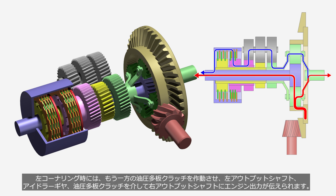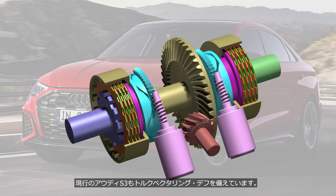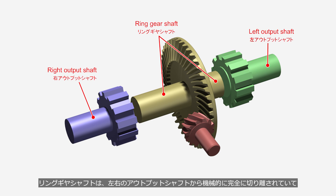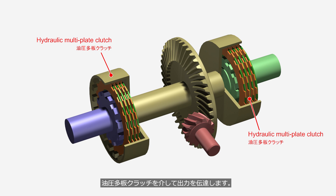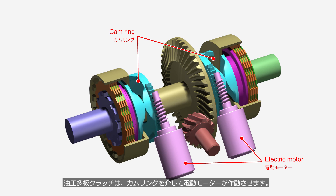During left cornering, the other hydraulic multi-plate clutch is engaged, transmitting engine power to the right output shaft via the left output shaft, idler gear, and hydraulic multi-plate clutch. The current Audi S3 is also equipped with a torque vectoring differential, with a mechanism much simpler than that of Mitsubishi's system. The ring gear shaft is mechanically completely disconnected from the left and right output shafts and transmits power through a hydraulic multi-plate clutch, which is actuated by electric motors through a cam ring.